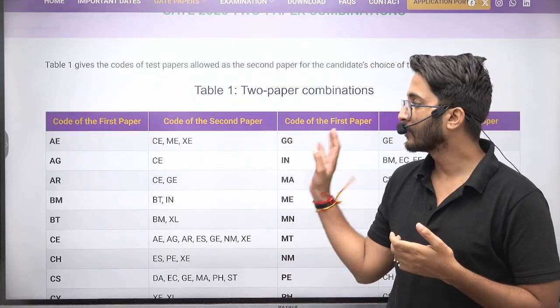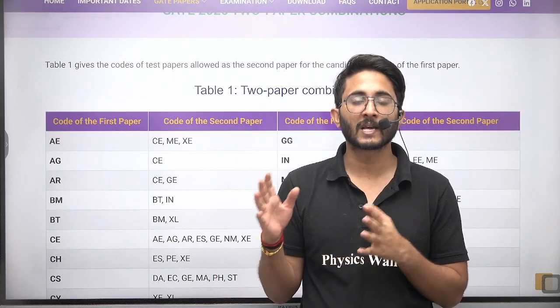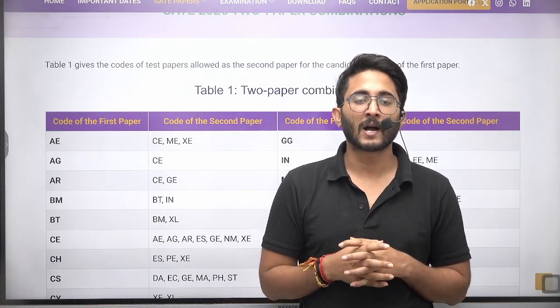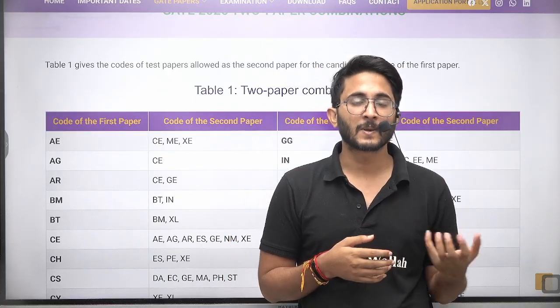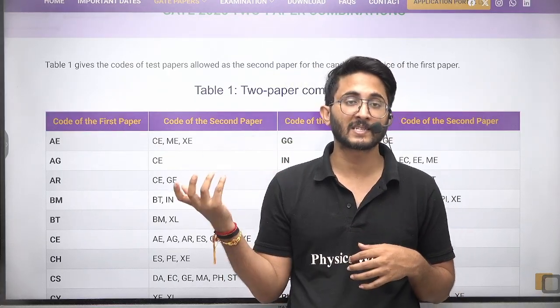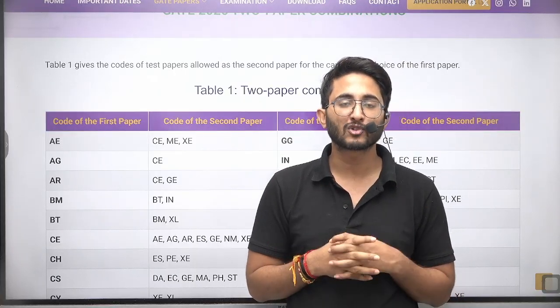But maximum students are trying to appear in two papers because they want a scorecard. So if they have a scorecard, for an example if one branch paper they are not able to perform well, in case second branch they perform well, then they can utilize that particular score for multiple opportunities.